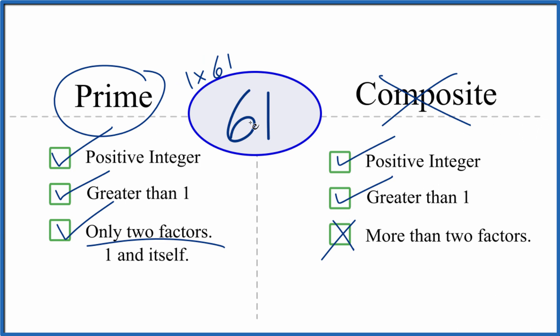This is Dr. B looking at whether 61 is a prime number or a composite number. It's a prime number. Thanks for watching.